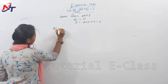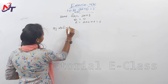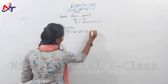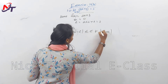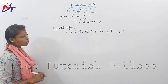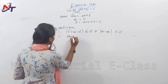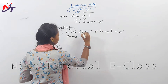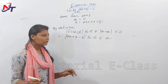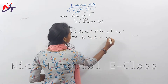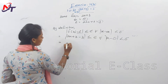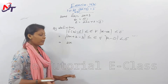As x tends to 0, f(x) = 2x + 3, so L = 2(0) + 3 = 3. Then by the epsilon-delta definition: |f(x) - L| ≤ ε for all |x - a| < δ. Substituting f(x) = 2x + 3 and L = 3: |2x + 3 - 3| < ε, which simplifies to |2x| < ε for all |x - 0| < δ.